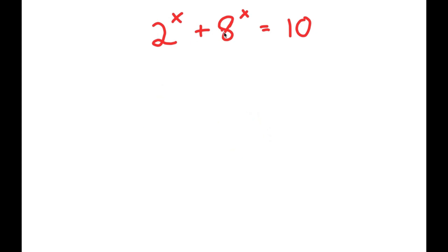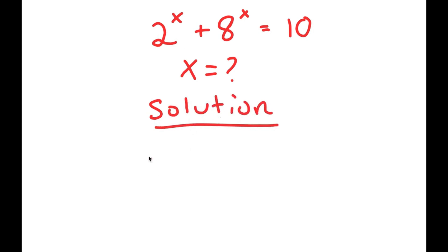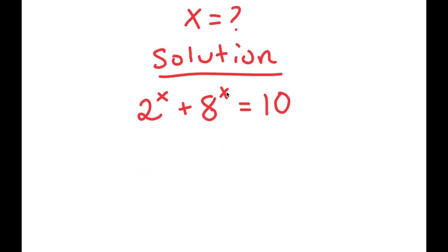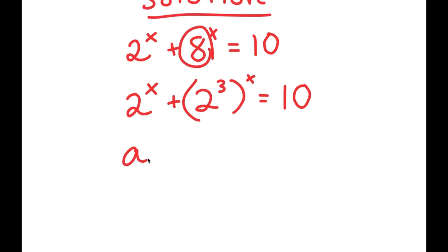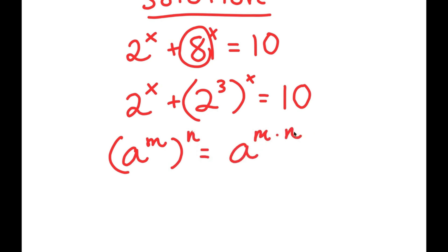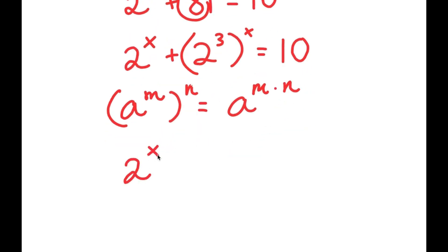In this problem, I have 2 to the power of x plus 8 to the power of x is equal to 10. I want to find the value of x here. Now, 8 I can rewrite as 2 to the power of 3. So I get 2 to the power of x plus 2 to the power of 3 to the power of x equals 10. If I have something in the form a to the power of m to the power of n, this is equal to a to the power of m times n. So 2 to the power of 3 to the power of x is the same thing as 2 to the power of 3x.